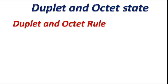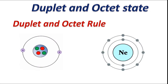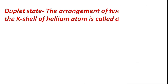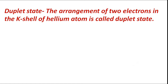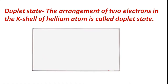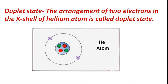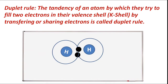Duplet state is the arrangement of two electrons in the K shell of a helium atom. In helium, two electrons are present in the K shell. According to the duplet rule, two hydrogen atoms share one electron with each other to complete their duplet state, leading to the formation of a hydrogen molecule.